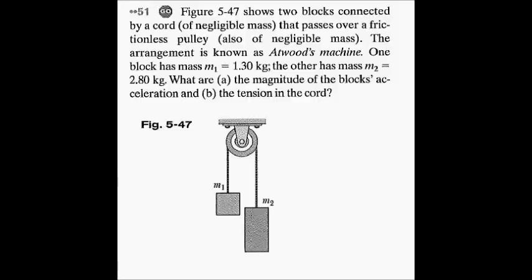Figure 5-47 shows two blocks connected by a cord of negligible mass that passes over a frictionless pulley, also of negligible mass. The arrangement is known as Atwood's machine. One block has mass M1 equal to 1.30 kilograms, the other has mass M2 equal to 2.80 kilograms. What are A, the magnitude of the block's acceleration, and B, the tension in the cord?